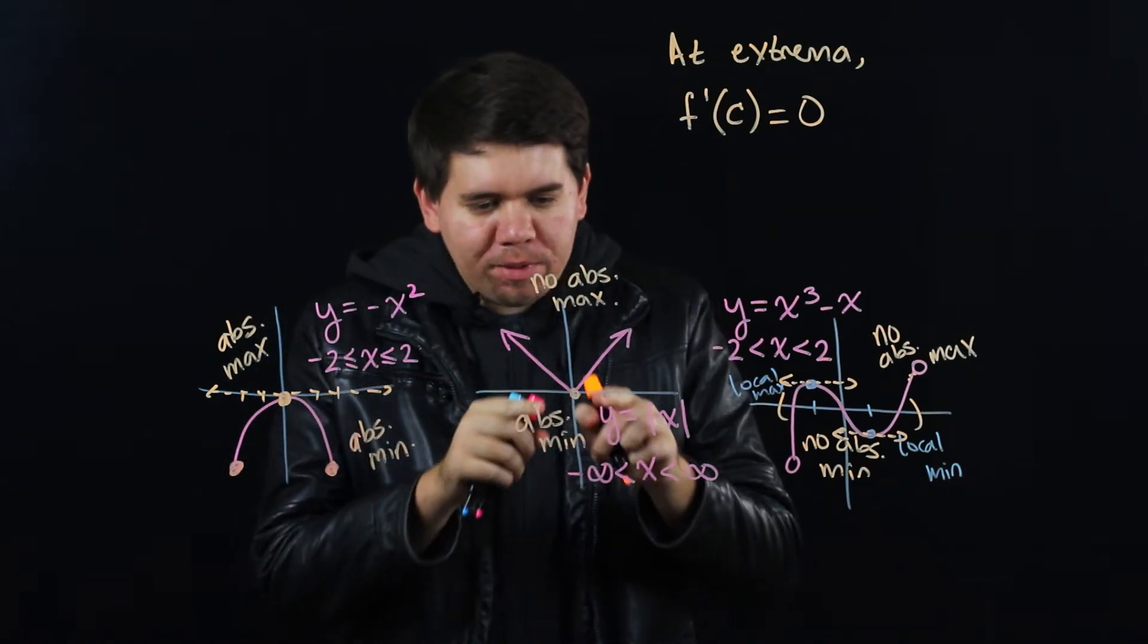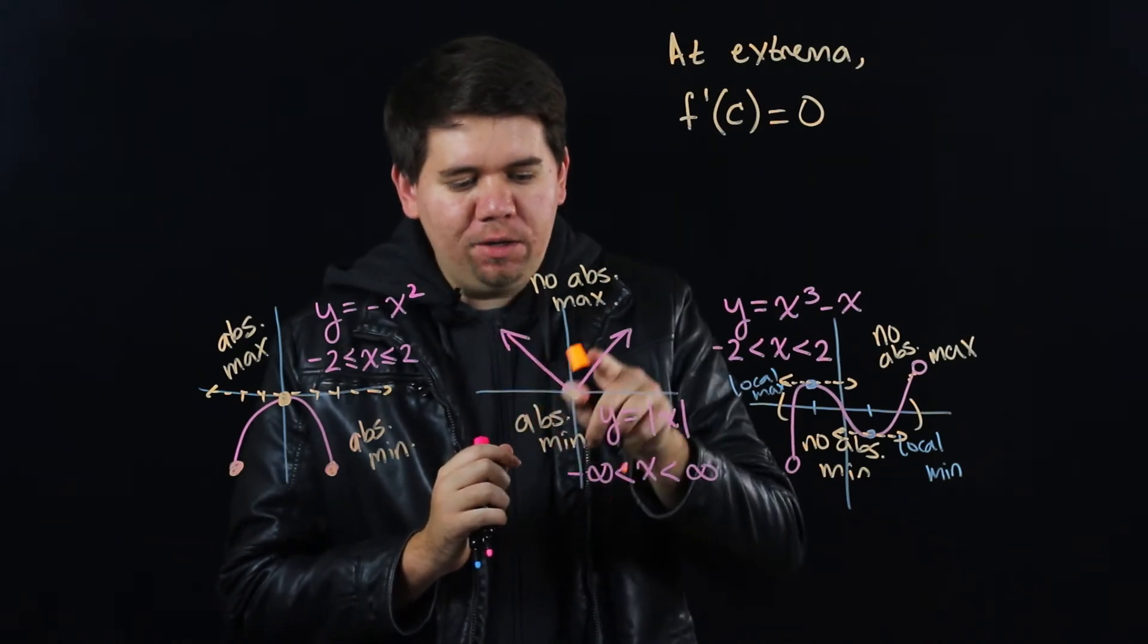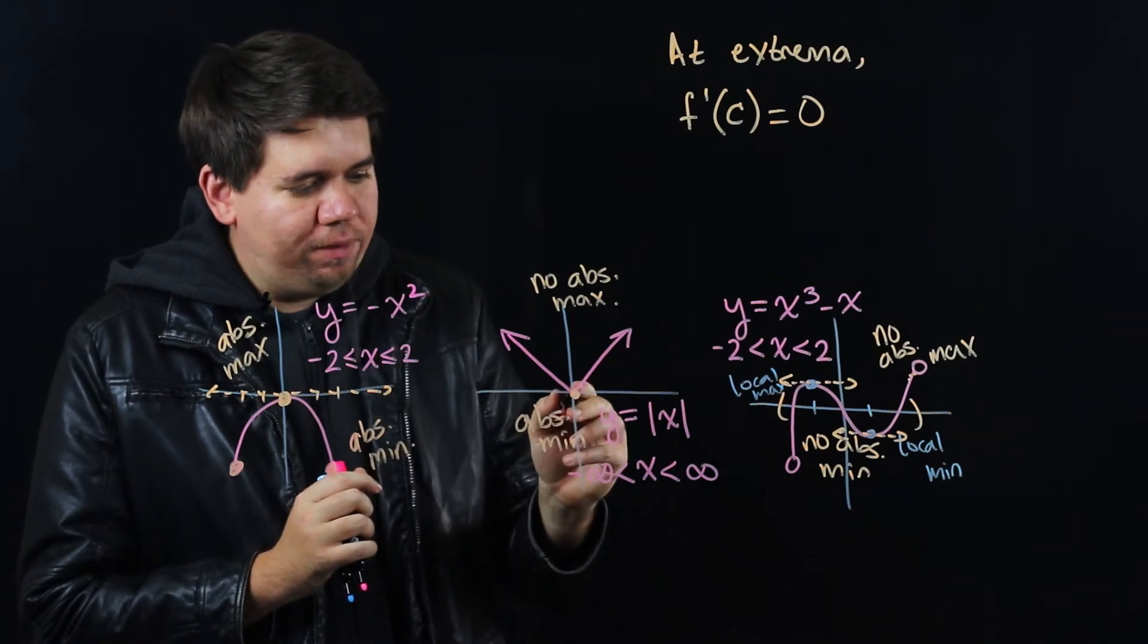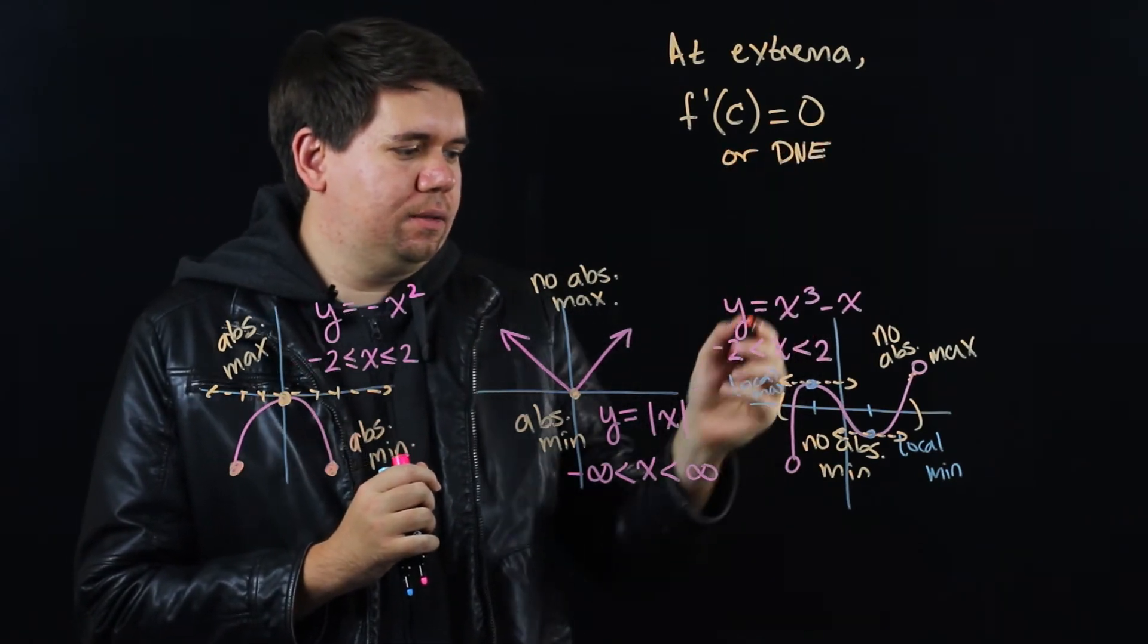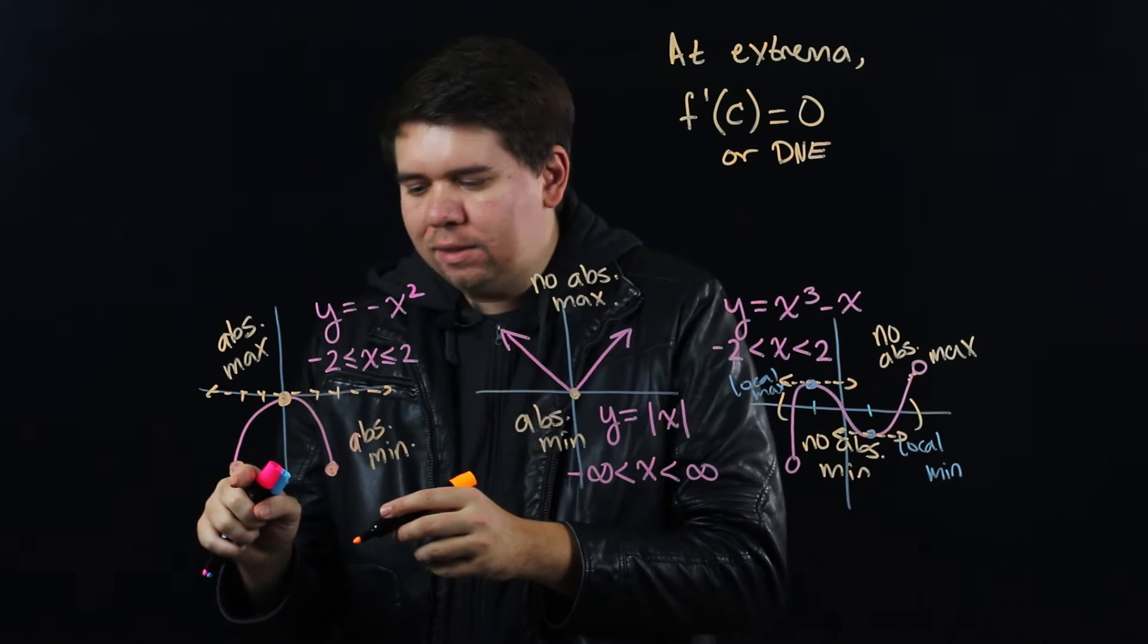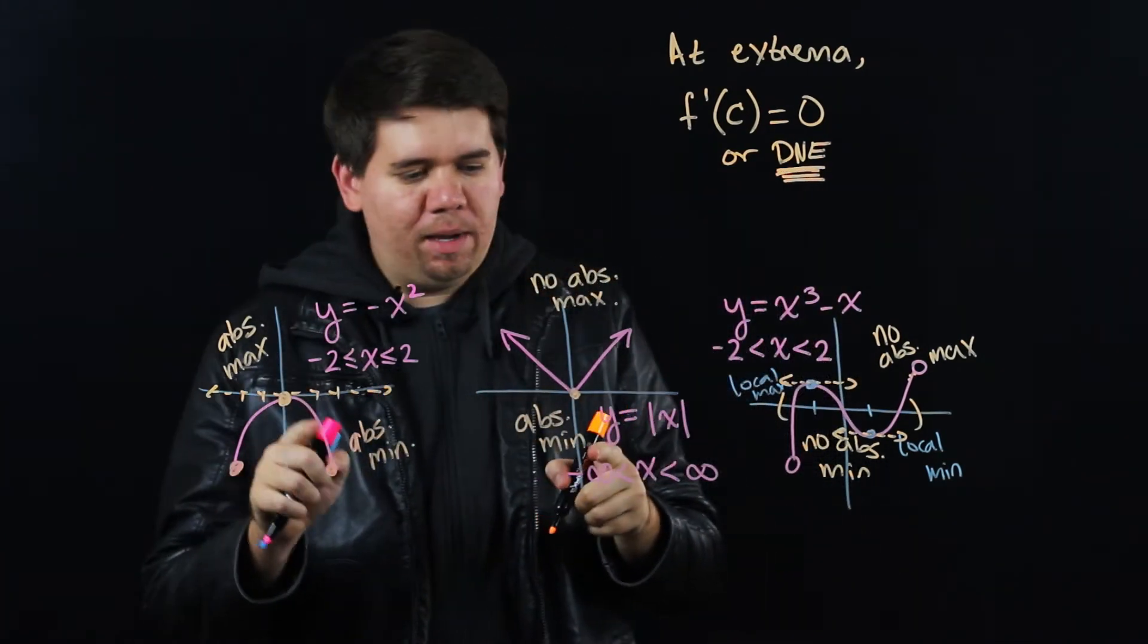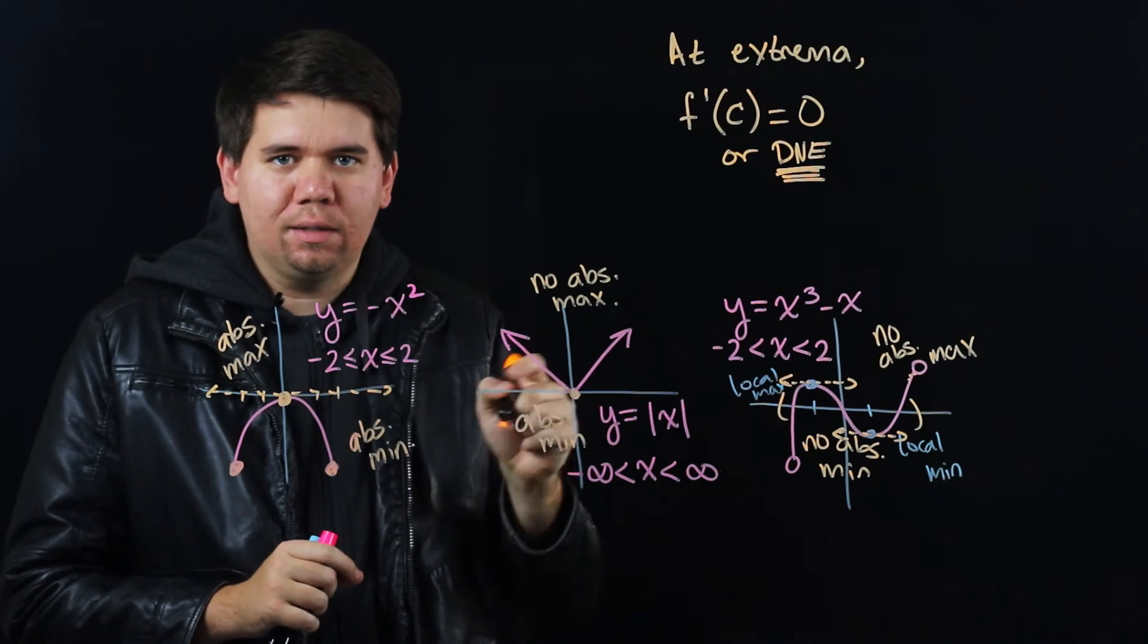So you might think that the derivative is always equal to 0. Well that's not quite right because remember the middle example. This middle example right here, we have an absolute minimum. But since this is the absolute value graph, this function doesn't have a derivative defined at 0. From one side is pointing down, from the other side is pointing in the other direction. And so the derivative is not defined there. That's another possibility. Your derivative is 0 or it does not exist. That also explains why at these endpoints you can't even calculate the derivative because you only have data on one side.